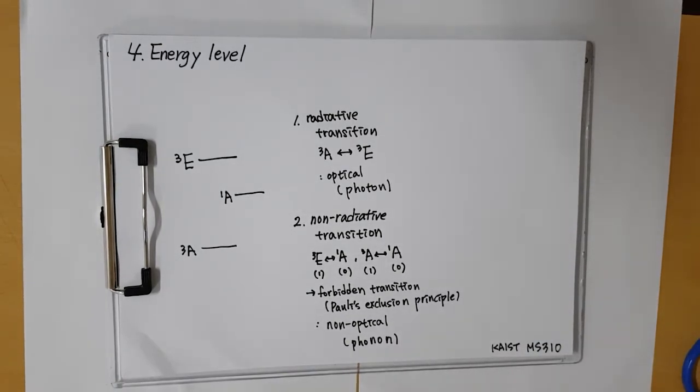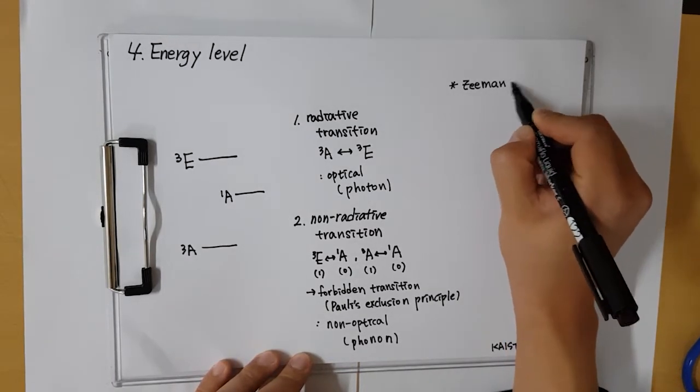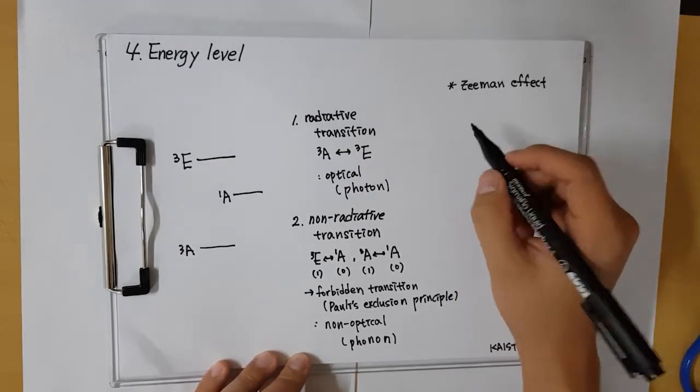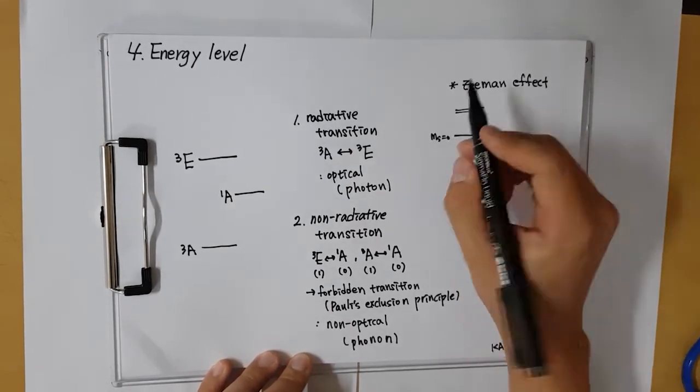As we mentioned before, ms plus 1 and ms minus 1 state have the same energy. However, magnetic field splits degenerated two ms plus minus 1 states.